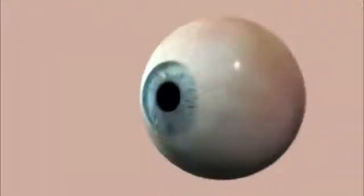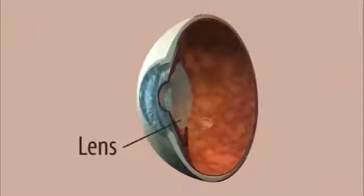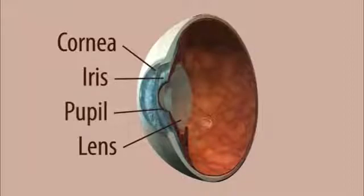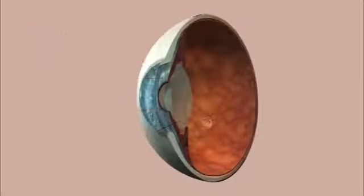A cataract is the clouding of the eye's natural lens, a structure which is positioned behind the cornea, iris, and pupil. Like the glass lens of a camera, our lens adjusts to focus our vision. The lens is mostly made up of water and protein.